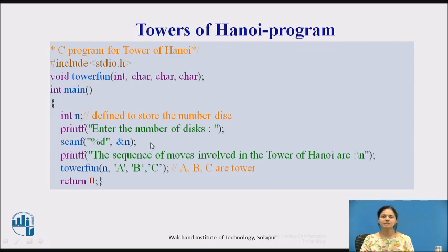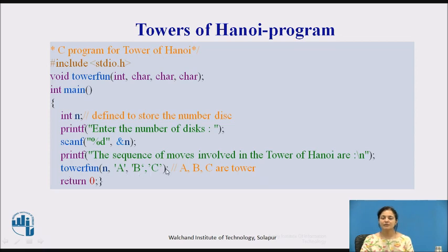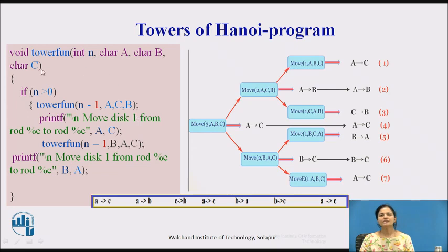This is the program for the Tower of Hanoi. We have a tower function that takes the number of disks and the tower names as characters. We ask the user how many disks there are and accordingly call the function by sending A, B, and C — where A is the source, C is the destination, and B is the auxiliary tower.